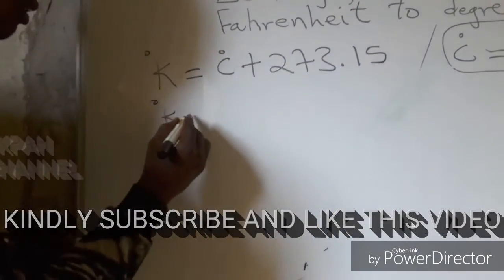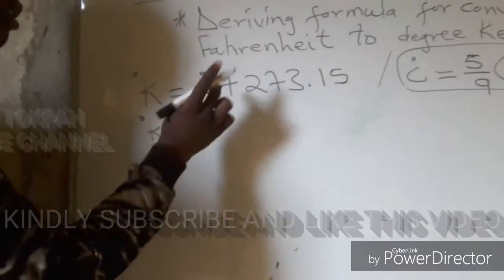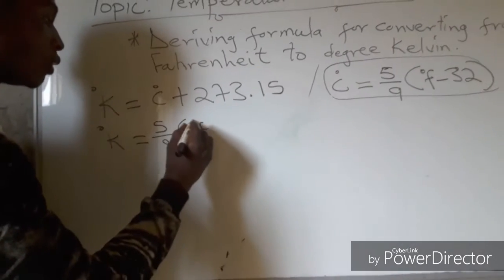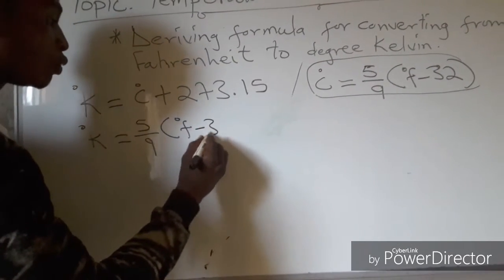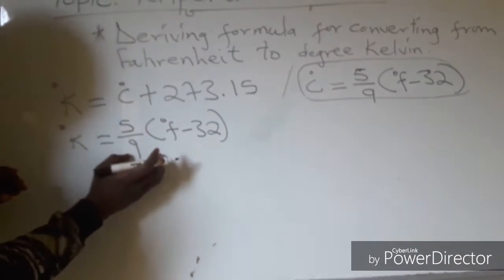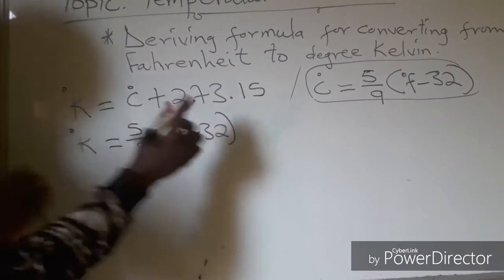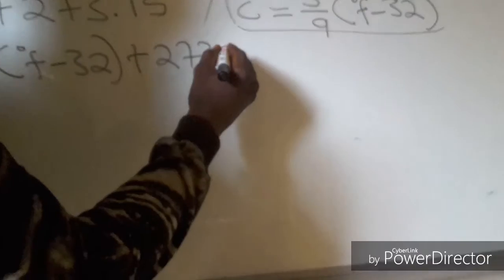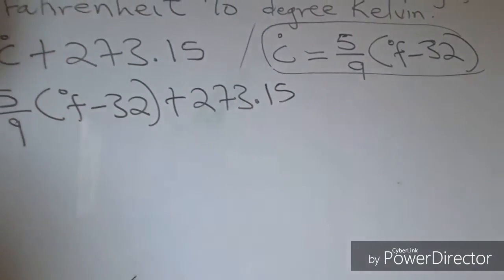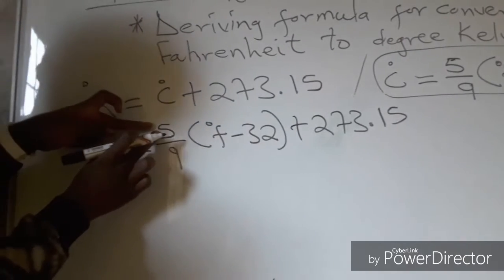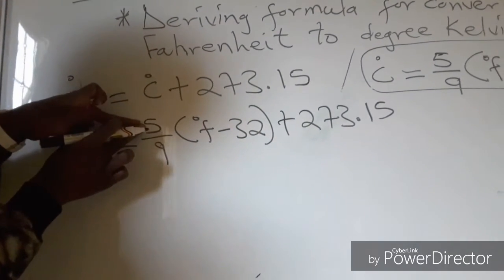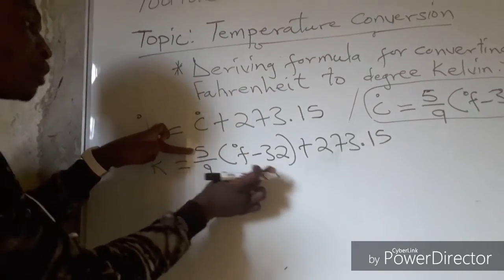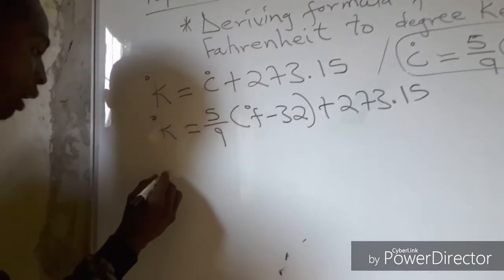So, degree Kelvin will be equal to, degree Celsius is equal to 5/9 (degree Fahrenheit minus 32). So, the whole equation represents degree Celsius plus 273.15. The next thing you're going to do now is multiply the numerator here by the values that are in the brackets. So 5 times (degree Fahrenheit minus 32), expressed by 9. So, by that we say degree Kelvin,